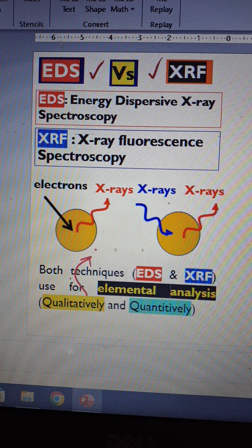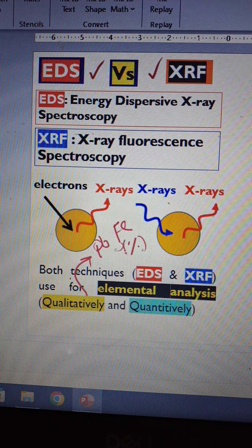Qualitatively means what element exists, like lithium or iron. Quantitatively means what percent of that element exists in terms of atomic percent or weight percent.